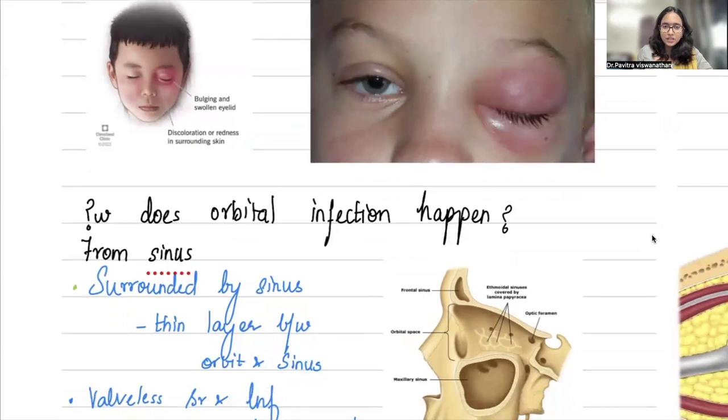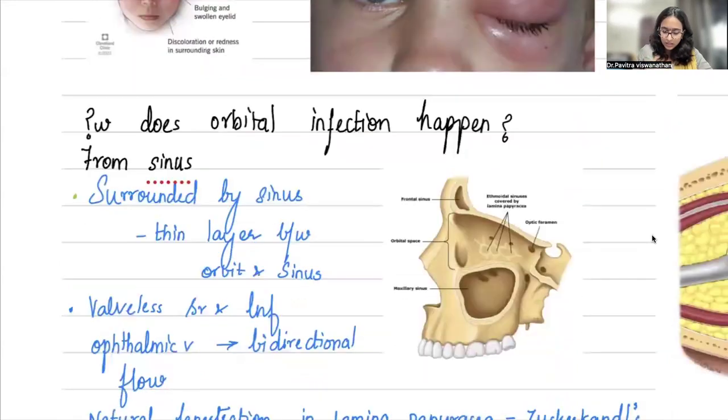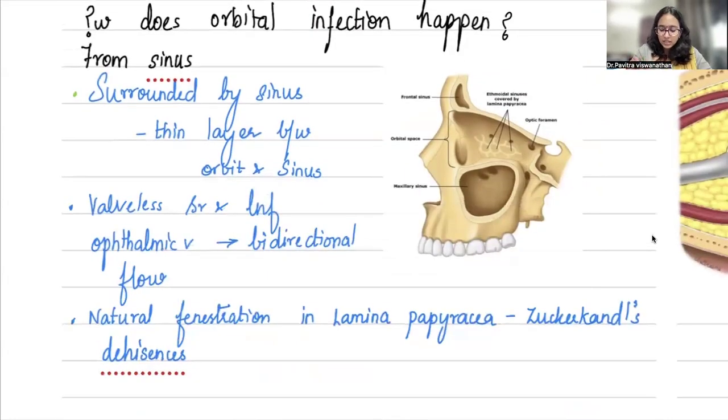Generally it's an extension from the surrounding sinuses. If you look at this picture, it's like a cut section. You're seeing the frontal sinus here, and this is the space where the orbit is going to lie. Behind the orbit you have a thin plate of bone, the lamina papyracea—papyracea means like paper, it's a very thin sheet of bone. Beneath that is the maxillary sinus, and behind and above is the sphenoid sinus. Basically, this orbit is sitting surrounded by sinuses on multiple layers.